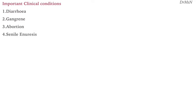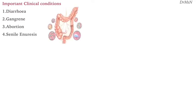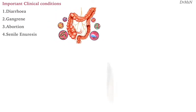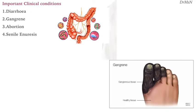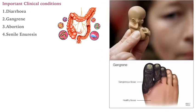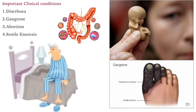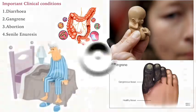Important clinical conditions of Secale are diarrhea, gangrene, abortion, and senile enuresis. The first three conditions are already mentioned in the origin and crude action of the drug. And senile enuresis means bed-wetting in old age.